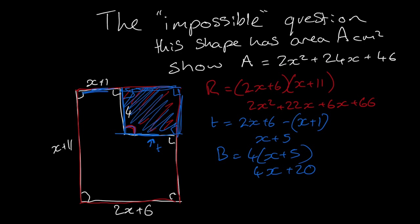So we know that the area of A equals the area of R minus the area of B. So this becomes a simple subtraction. So we get left with a 2x squared and then we need to do this bit here minus this bit here. So 22x plus 6x is 28x minus the 4x gives us 24x. And then we need to do this 66 minus this 20 which equals 46. And then that is the answer to our equation.